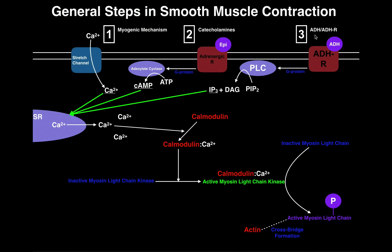The third way is through antidiuretic hormone. Antidiuretic hormone's other function is to induce vasoconstriction, which involves smooth muscle contraction. ADH binds to the ADH receptor, which also activates a G protein, but in this case that G protein activates another enzyme called phospholipase C. Phospholipase C converts the membrane lipid PIP2 into DAG — which we don't need to focus on here — and inositol trisphosphate, or IP3.